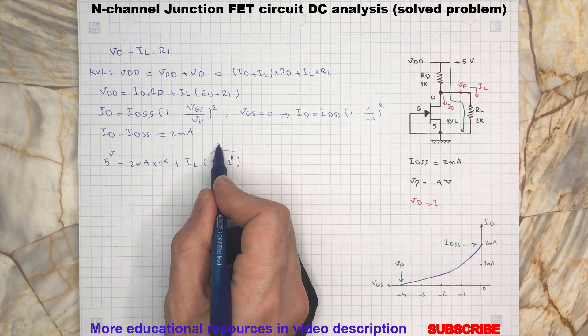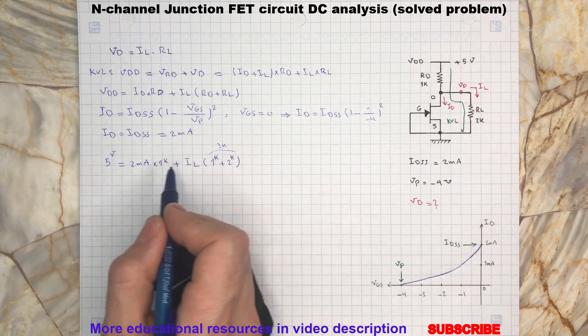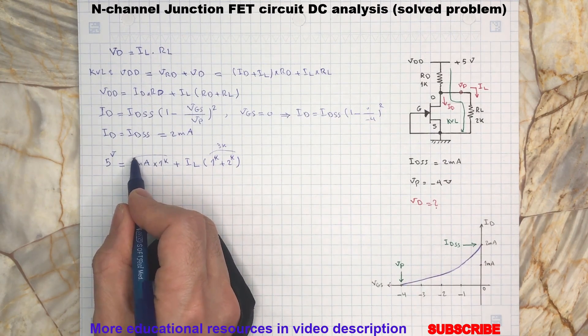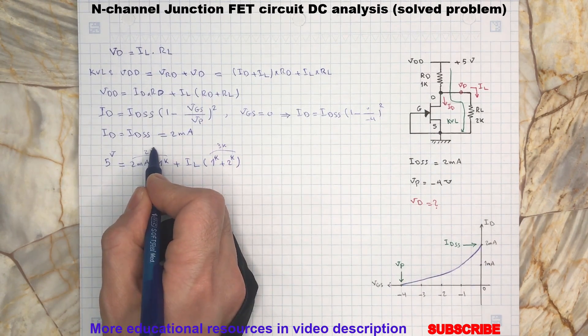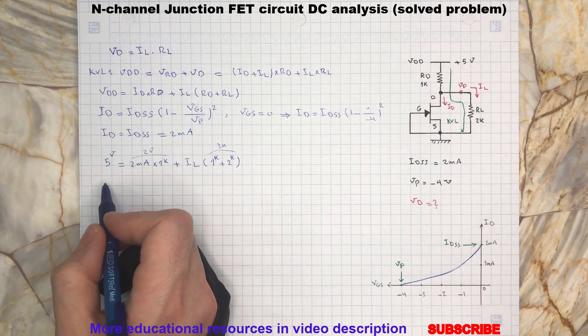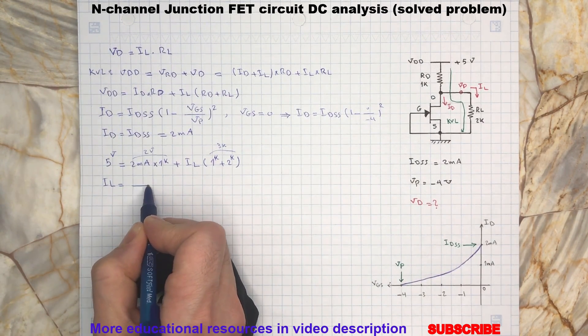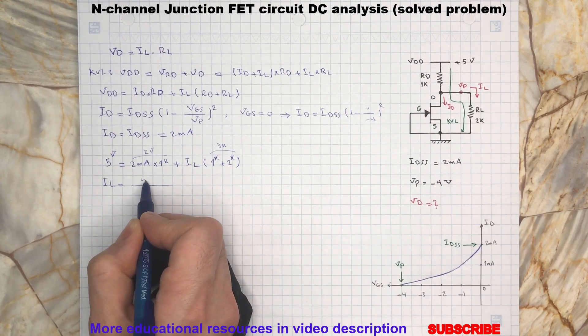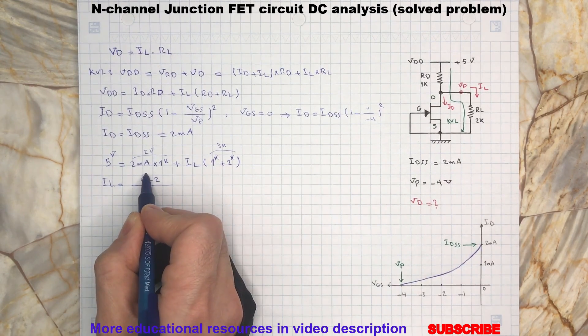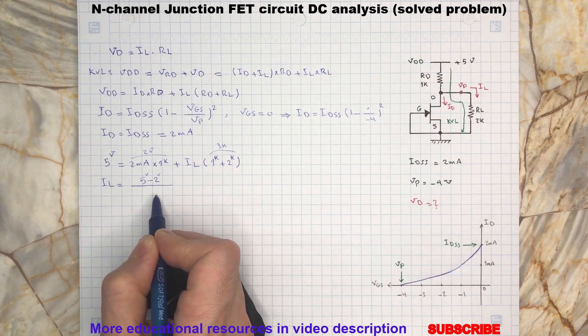This is 3 kiloohms, which gives us 2 volts. So IL will be 5 minus 2 volts divided by 3 kiloohms, which gives us 1 milliamp. Now we can calculate VD: VD equals IL, which is